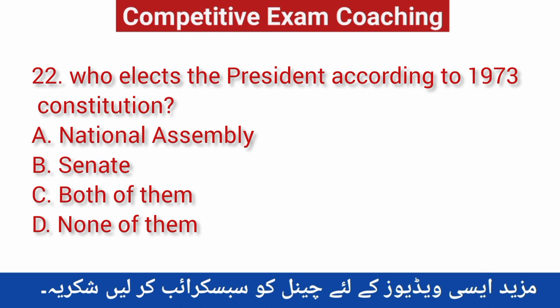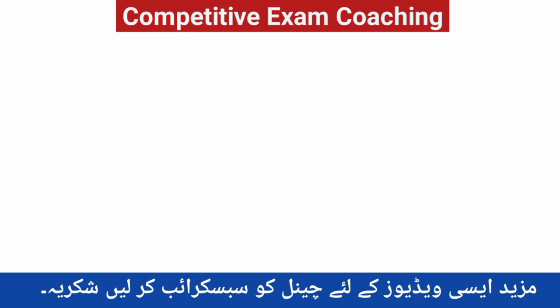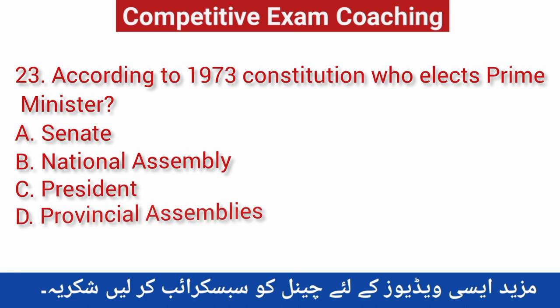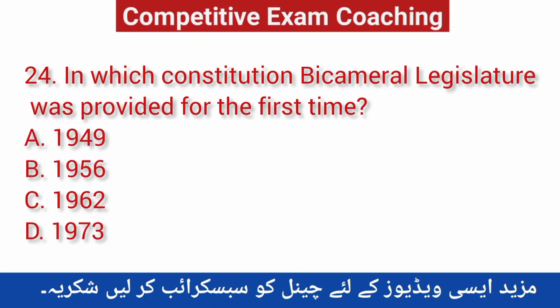Question number twenty-two: Who elects the president according to the 1973 constitution? Correct answer is C — both the National Assembly and Senate. Question number twenty-three: According to the 1973 constitution, who elects the prime minister? Correct answer is A — National Assembly. Question number twenty-four: In which constitution was bicameral legislature provided for the first time? Correct answer is D — 1973 constitution.